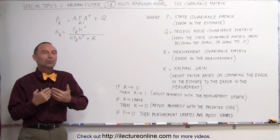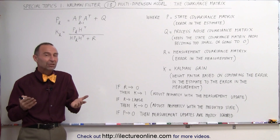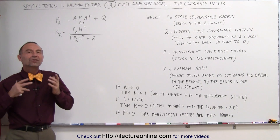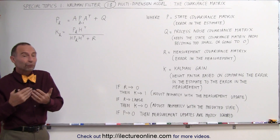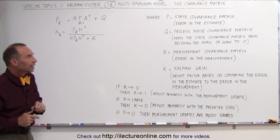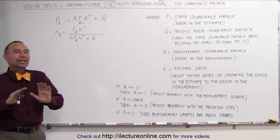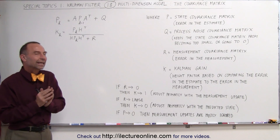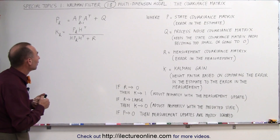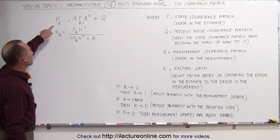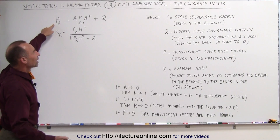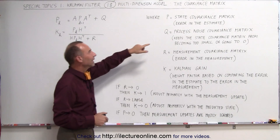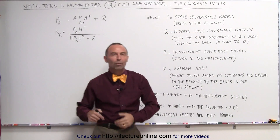Here we're going to deal with something called a covariance matrix. It has a lot to do with standard deviation, variance, and covariance. But first we want to get the general view of what we're trying to understand. P stands for what we call the state covariance matrix — it is an error in the estimate.